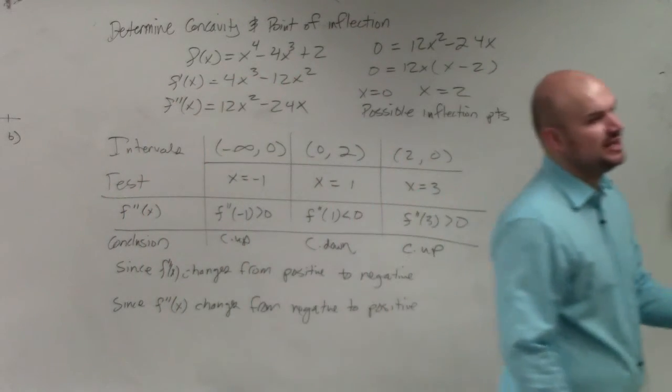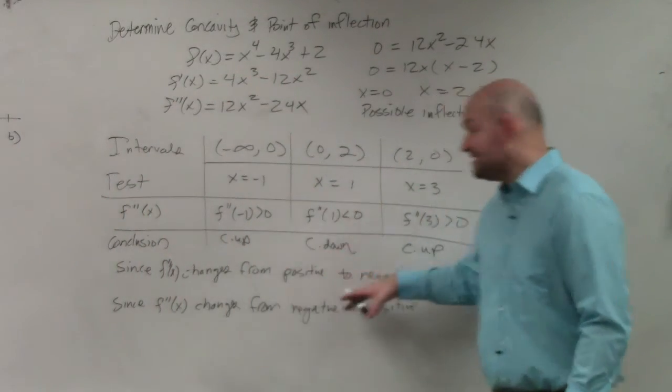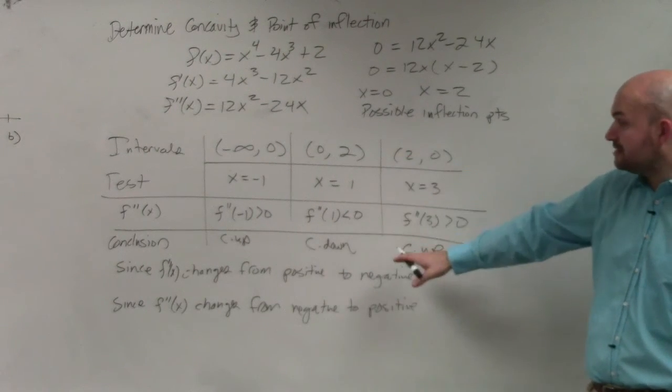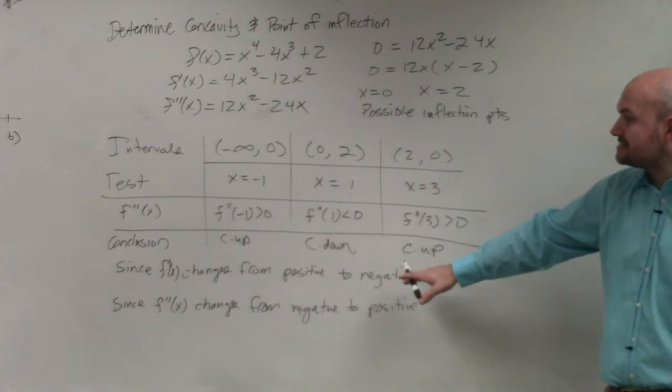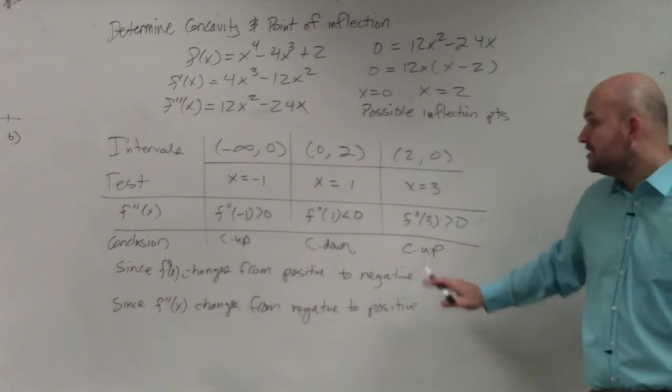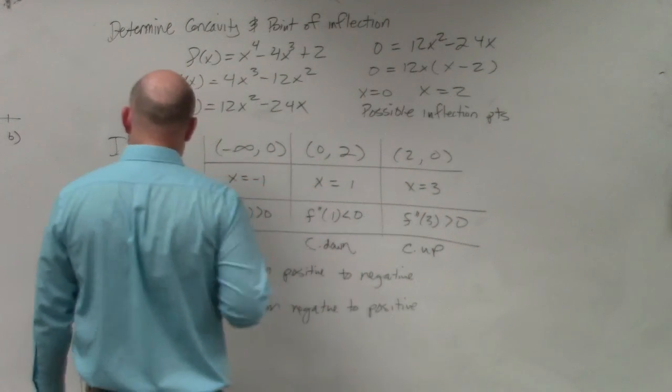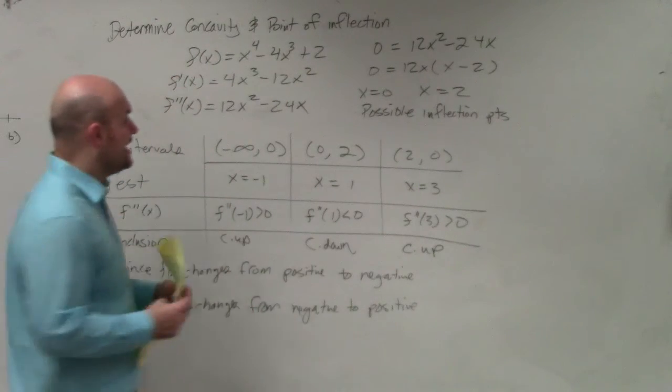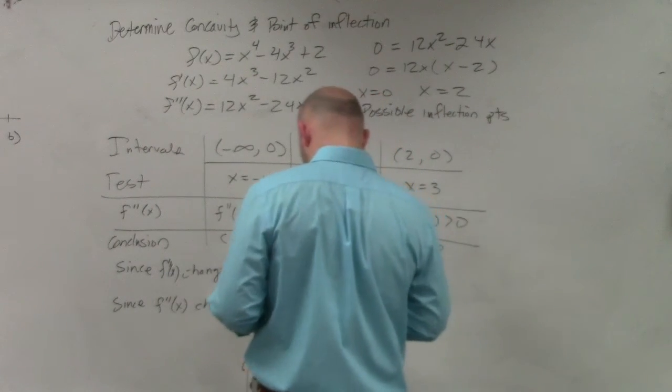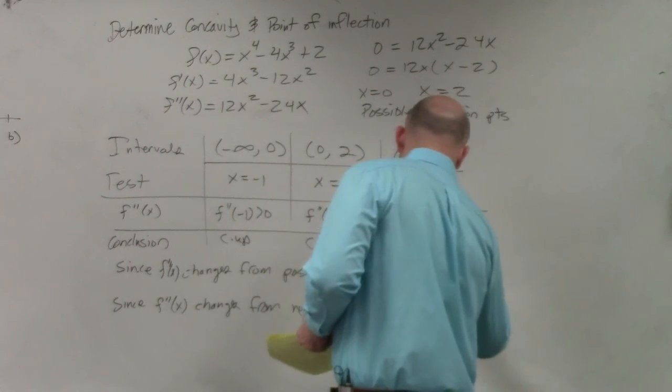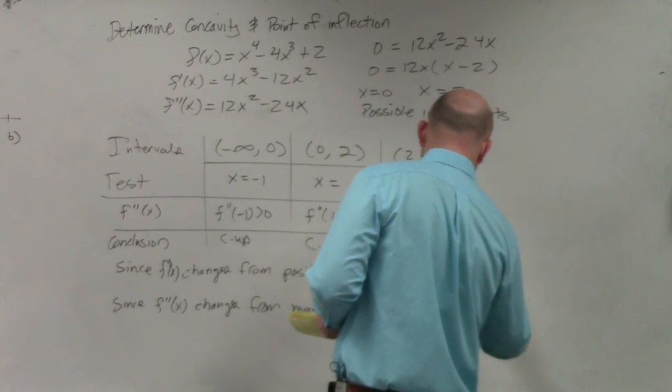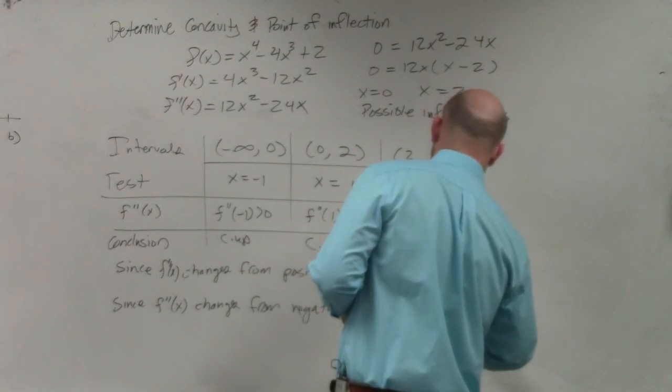since f double prime is changing from positive to negative. Now, since it's changing, double prime, that means it's changing, since the double prime of x is changing from positive to negative, that means the concavity is changing. So therefore, I could say that the point, where was my point, x equals zero. At x, wait, where's the change for positive to negative, yeah, at x equals zero, and then at x equals two,